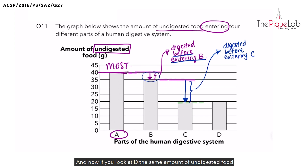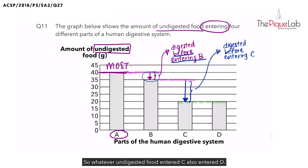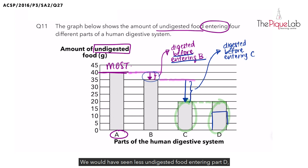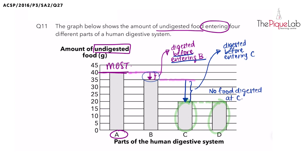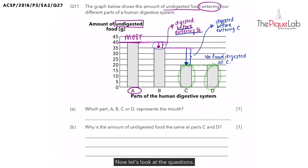Now if you look at D, the same amount of undigested food entered D as compared to C. So whatever undigested food entered C also entered D. That means was there any digestion happening at C? No. If there was digestion happening, we would have seen less undigested food entering part D. Since the amount remained the same, there was no food digested at C.